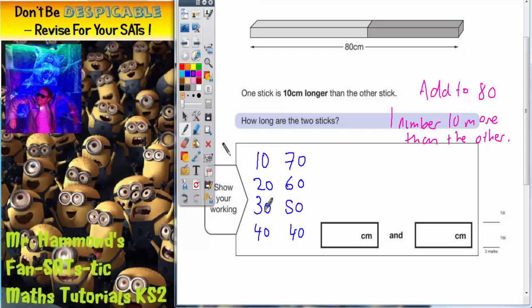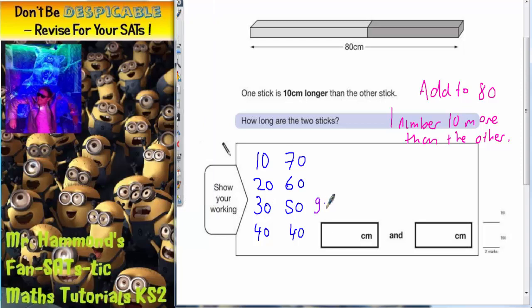So when it's 30 and 50, the gap is 20, and that gap is too big. When it's 40 and 40, the gap is 0, and that gap is too small.